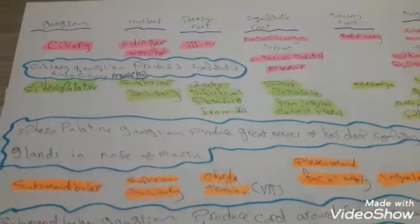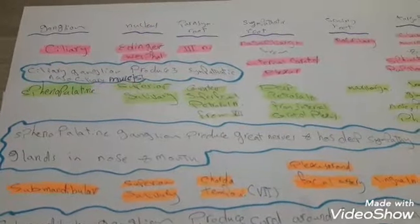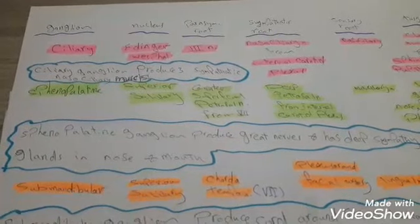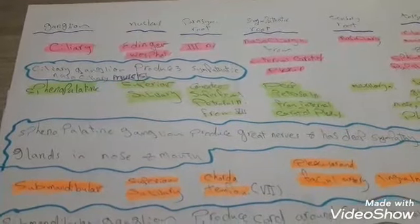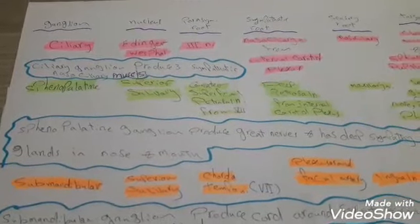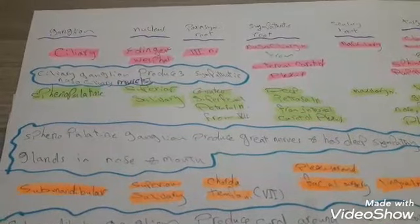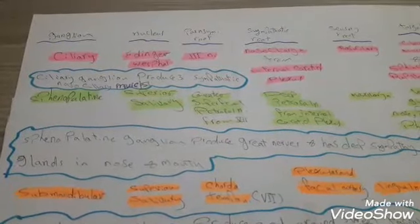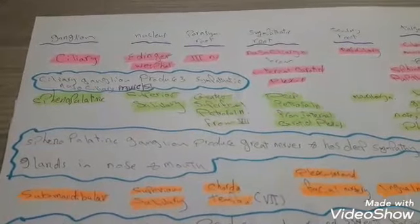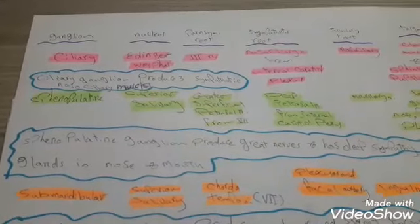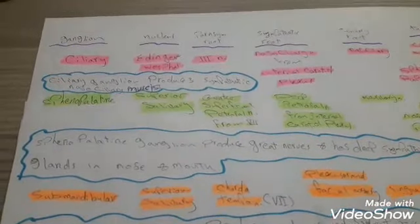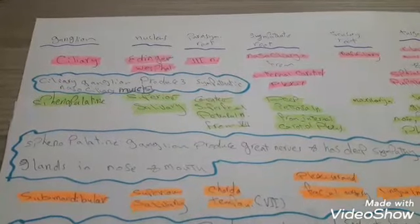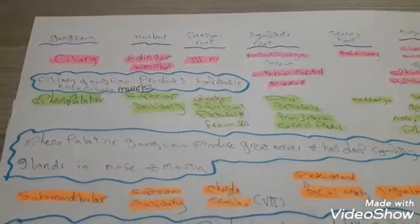The mnemonic is: 'Ciliary ganglion — produce three sympathetic nasociliary muscles.' Here, 'produce' refers to parasympathetic, 'three' is the third cranial nerve, 'sympathetic' is the sympathetic root, 'nasociliary' is the nasociliary nerve, and 'muscles' refers to the ciliary muscles.